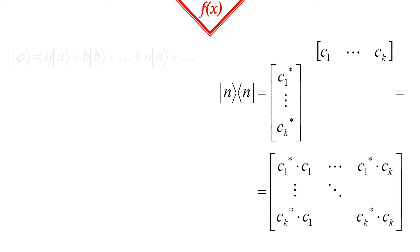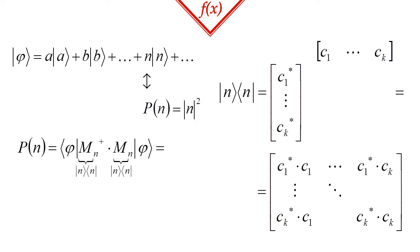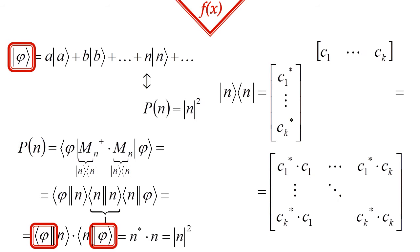The matrix M_n can be constructed as the matrix product of the nth basis vector with its conjugate transpose. Previously, we said we can calculate the probability as the absolute value square of the corresponding probability amplitude. We can arrive at this result by taking the equation calculating the probability, plugging the projector matrices into it, and then expressing the φ vector as a linear combination of the basis vectors.